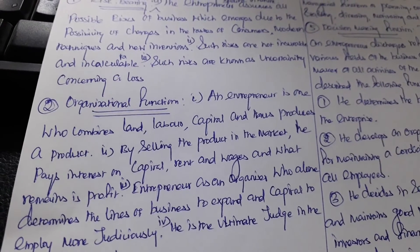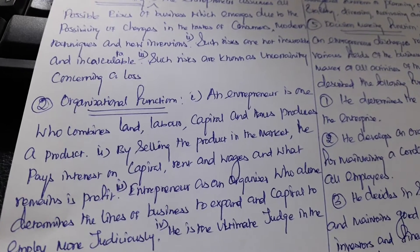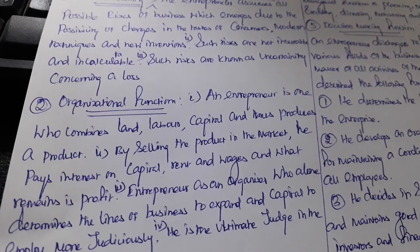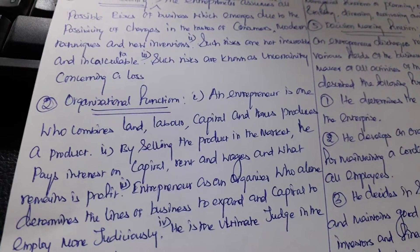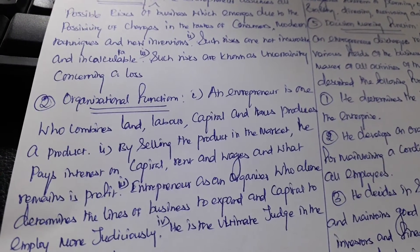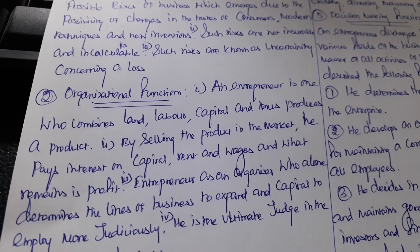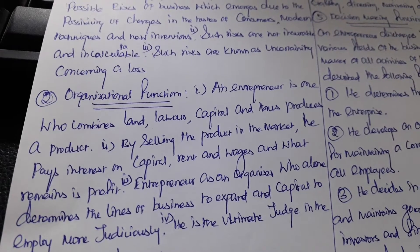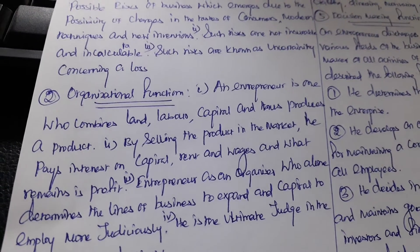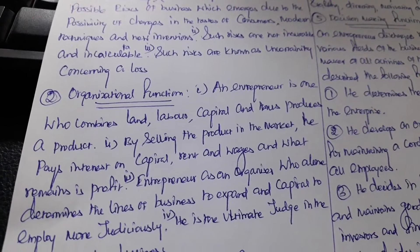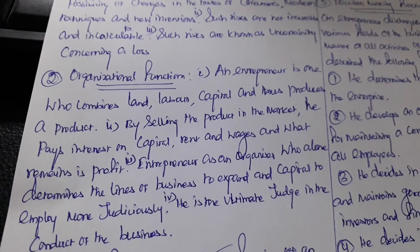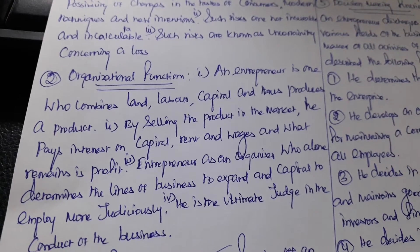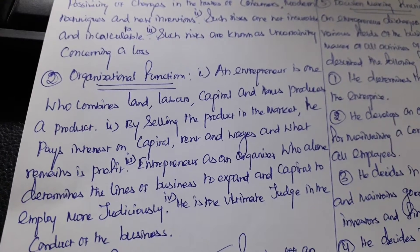The next function is the organizational function. An entrepreneur is one who combines land, labour and capital and thus produces a product. The entrepreneur arranges land, labour and capital for the purpose of producing a product. By selling the product in the market, he pays interest on capital, rent and wages, and what remains is profit.